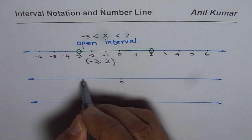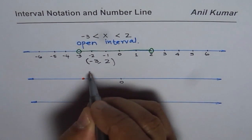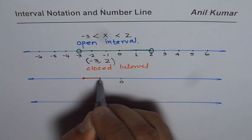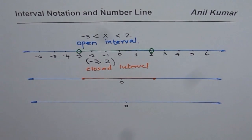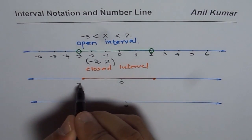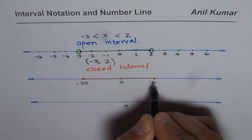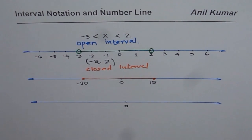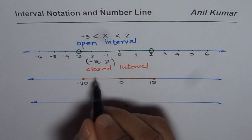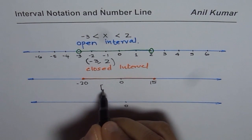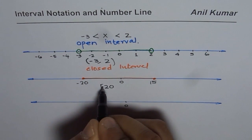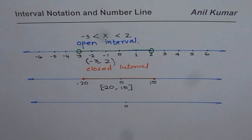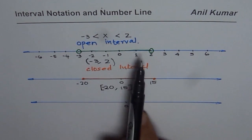Now let us say we have two numbers which are included — that is, we are talking about a closed interval. A closed interval means the endpoints are included. Let's say these two numbers are minus 20 and 15. How do we represent all the numbers between minus 20 and 15, where both are included, using interval notation? The closed interval is represented by a square bracket. When it is a square bracket, that means the number is included. So it is minus 20 on the left side and 15 on the right side, both included.